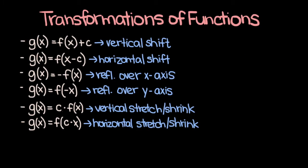Let's start off by just doing a quick recap of transformations. If you have some function f of x and you define g of x to be f of x plus c, then g of x is just f of x shifted in the vertical direction, and the direction of the shift — whether it's up or down — depends on the sign of c, whether it's positive or negative. Now, if you define g of x to be f of x minus c, then g of x is f of x shifted in the horizontal direction. Once again, the direction of the shift — so right or left — depends on the sign of c.